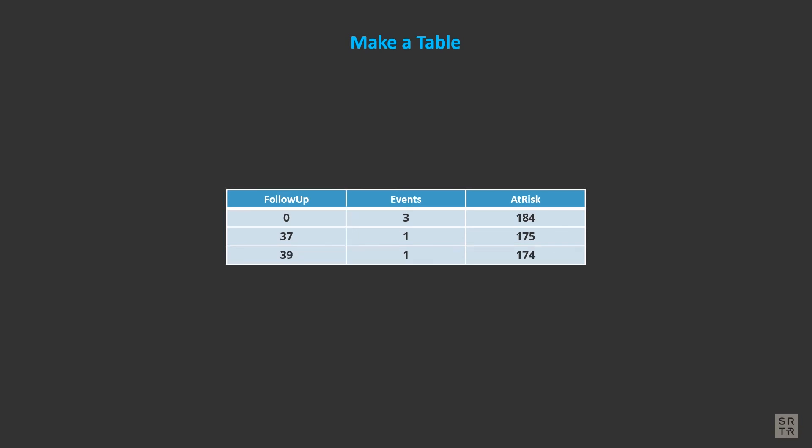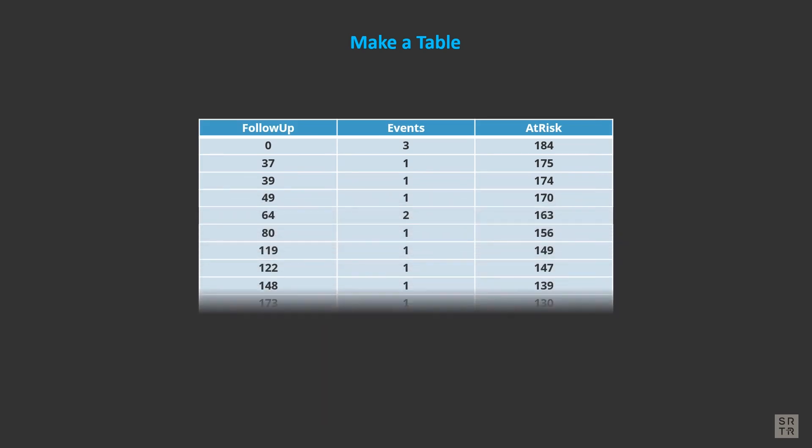Now we add the next row at follow-up day 39. Since the patient whose graft failed at 37 isn't at risk on day 39, the number at risk drops by 1. We continue to fill out the rest of the table.